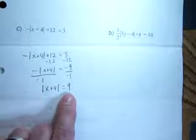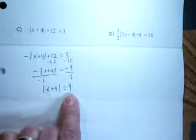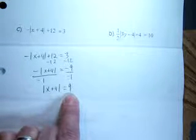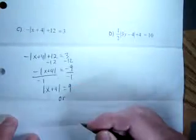Then I can remove this negative by dividing by negative 1 or multiplying by negative 1. That would work as well. And that isolates my absolute value and gets it all by itself equal to positive 9.